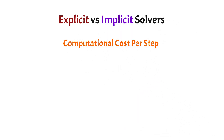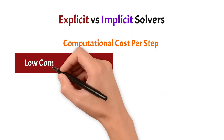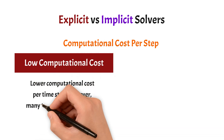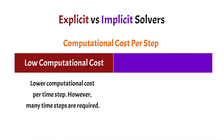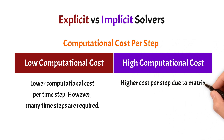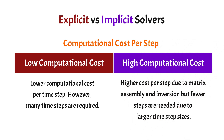Let's look at the computational cost per time step. Even though explicit solvers require a large number of time steps, they generally require a low computational cost per time step. For an implicit solver, however, you need a much higher computational cost because each time step involves matrix assembly and inversion and many iterations. But fewer steps are needed due to the large time step sizes.